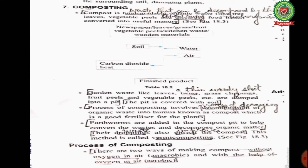Garden waste like leaves, twigs, grass clippings, fruit peels and vegetable peels are dumped into a pit, which is then covered with soil. The process of composting involves decomposition — that is, the decaying of organic waste matter. Earthworm droppings also help to enrich the compost; this method is called vermicomposting.